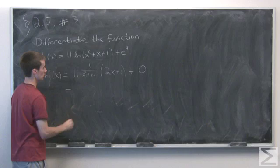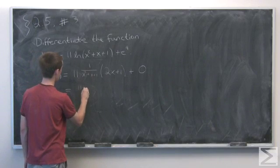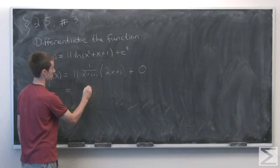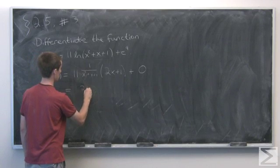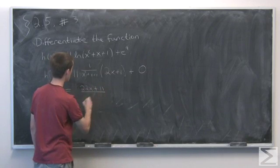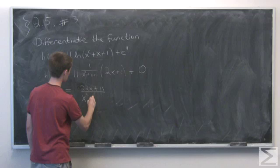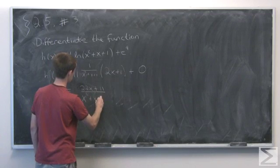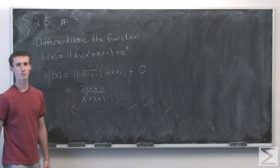So if we simplify this a little bit, we have 11 times 2x plus 1, which gives us 22x plus 11 over x² plus x plus 1 for our final answer.